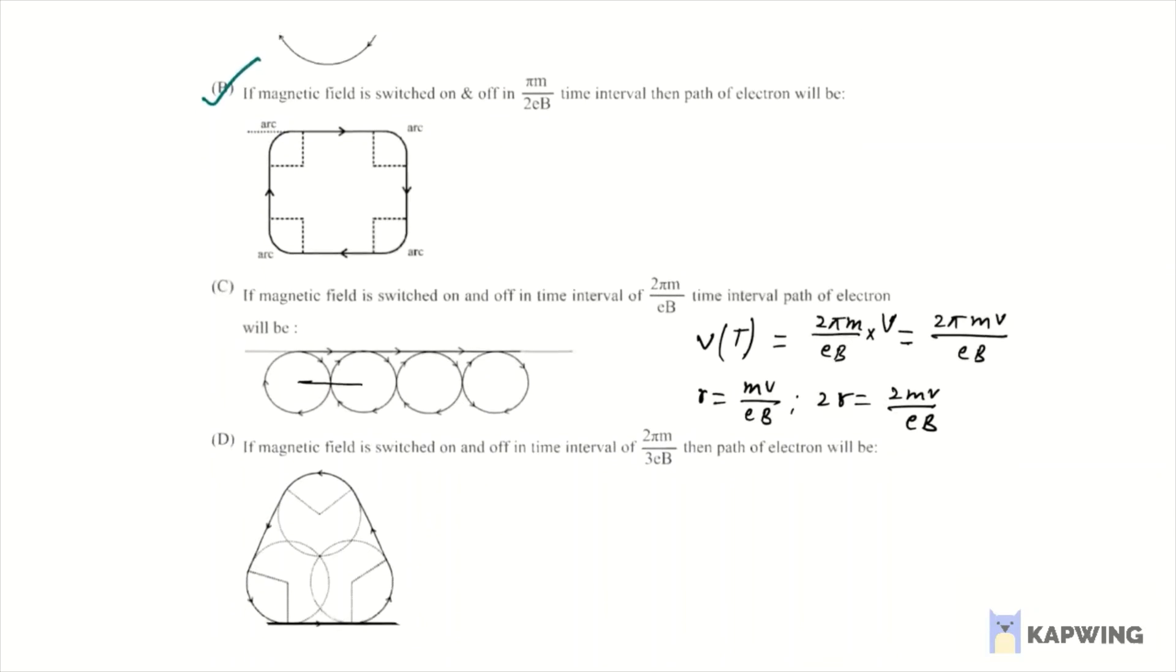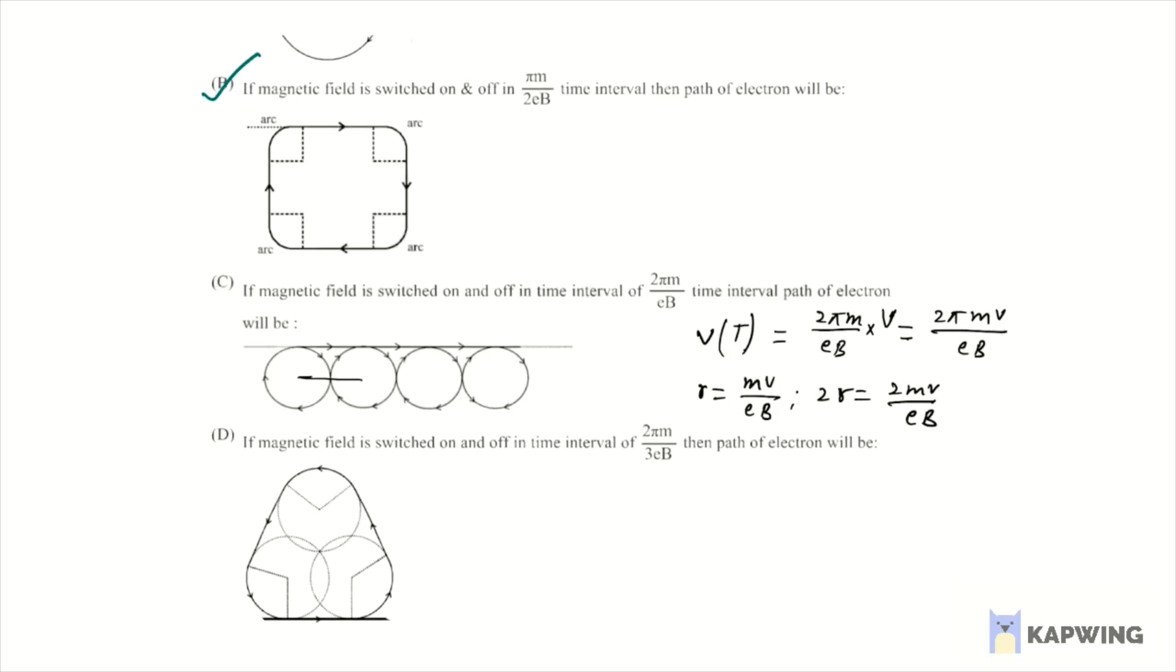And for the D option, whenever electron is moving in a straight line it must move downward circle, not upward circle. So the option is also incorrect. B is only the correct answer here. So answer of this question is option B. Thank you.